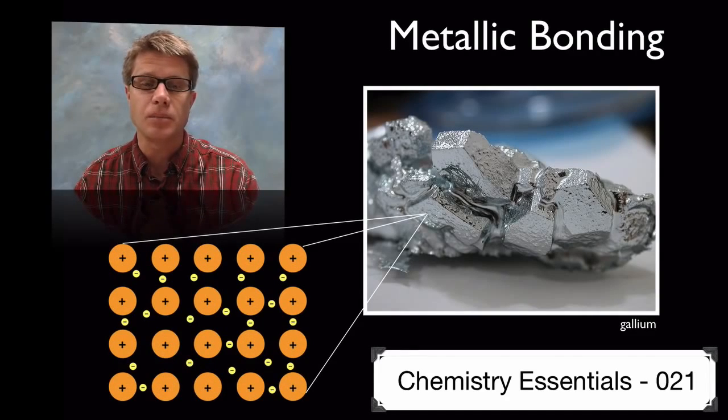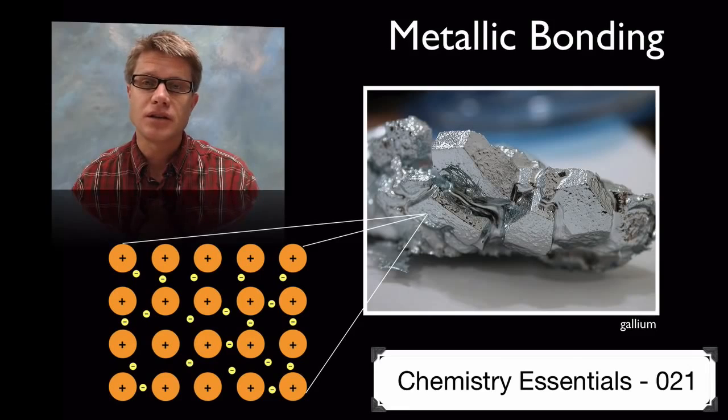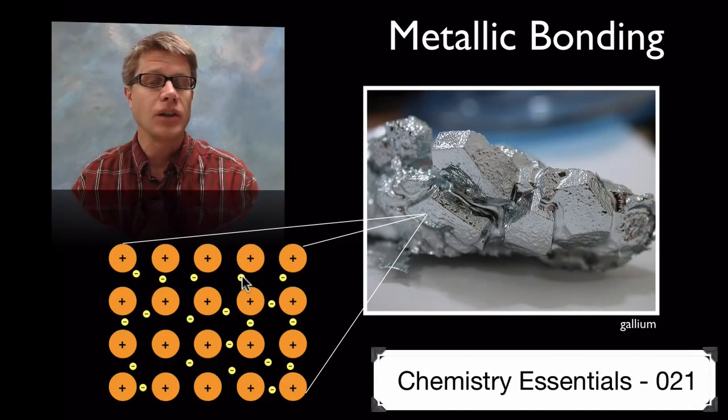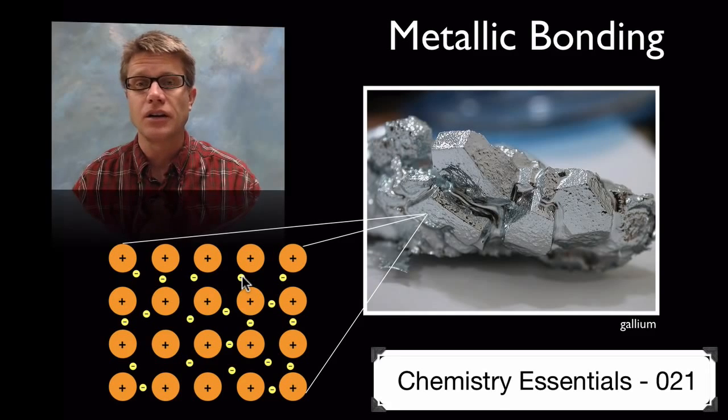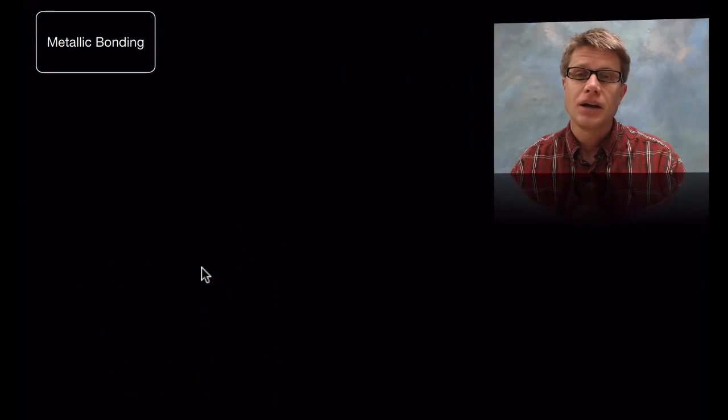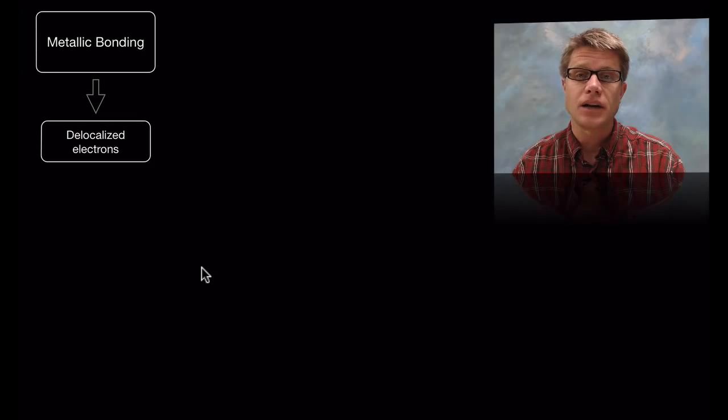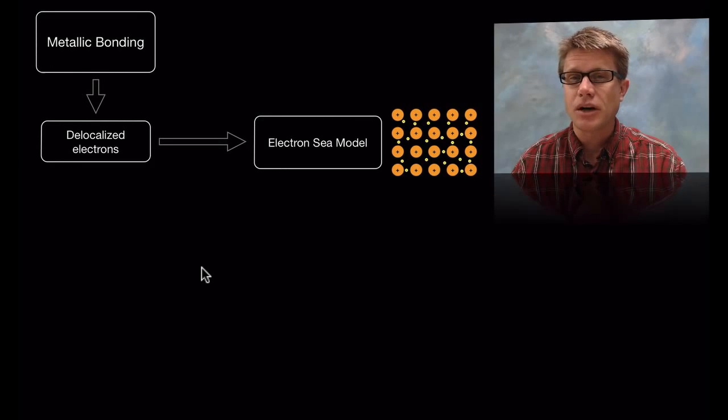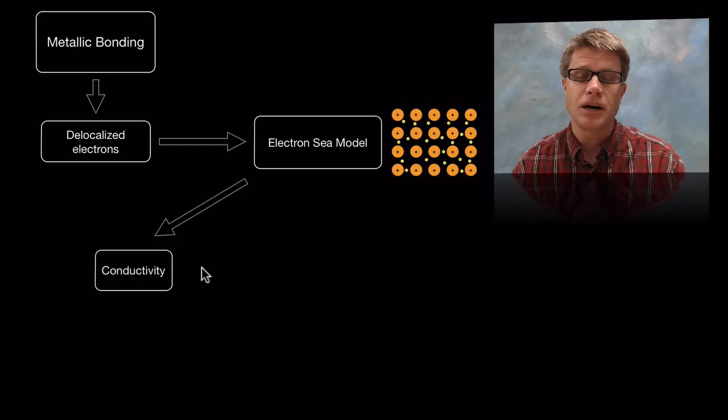And so the way we look at metallic bonding is the electron sea model, where you have all of these electrons and they're shared by all the atoms. It creates a sea of electrons and then the protons are kind of held on the inside of that. And so in metallic bonding what we have are delocalized electrons, or electrons that have a freedom to move. And the way we visualize that is through this electron sea model.